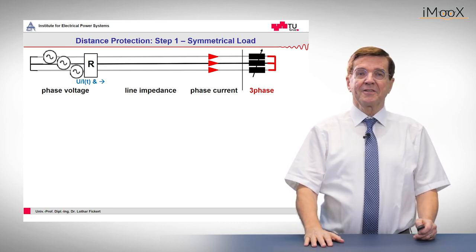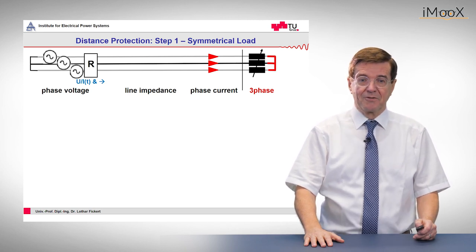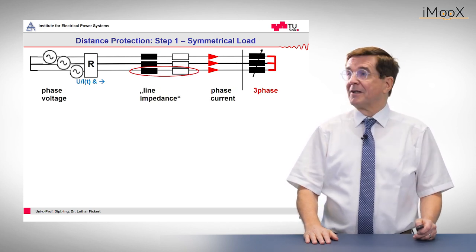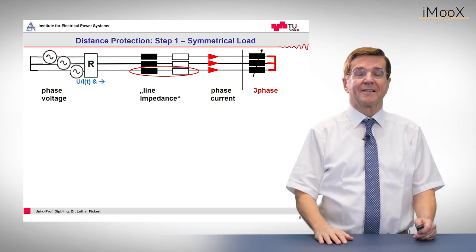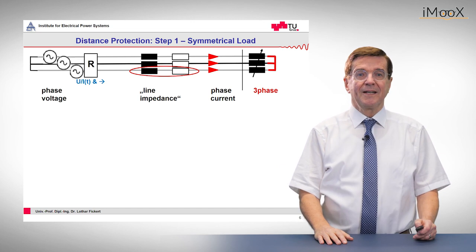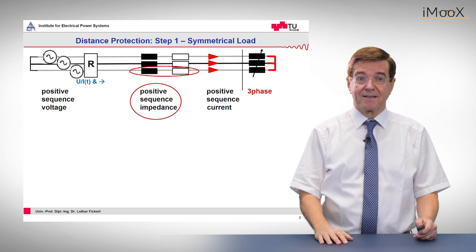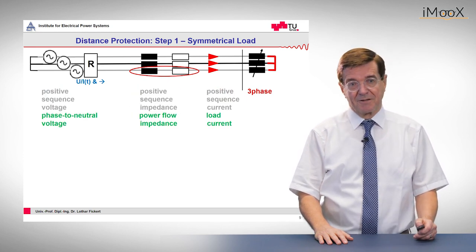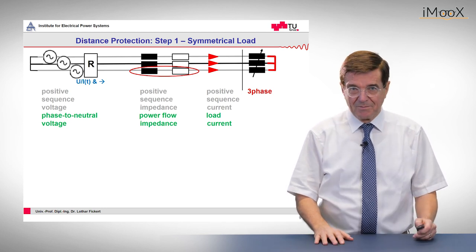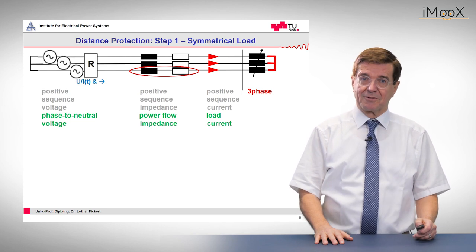For the consideration we start with a healthy network with a symmetrical load. That means we have a phase voltage, the line impedance, the phase current, and the three-phase load. Since all these are fully symmetrical, it turns out that the line impedance is identical to the positive sequence impedance, or as some people say, the power flow impedance. This is very common to all electrical engineers.